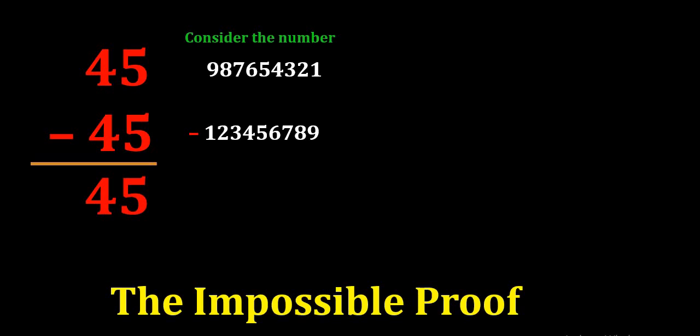Can you relate anything to 45 with this number? Before that, let's subtract these two numbers. If we subtract these two 9-digit numbers, we get 864197532 as the answer.